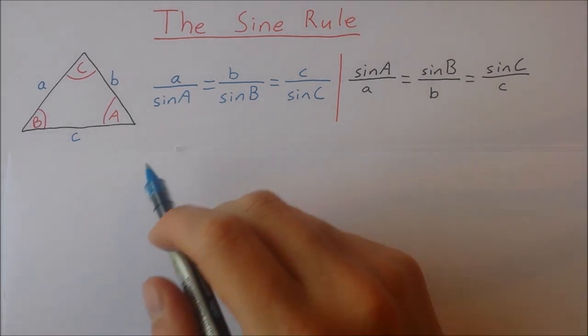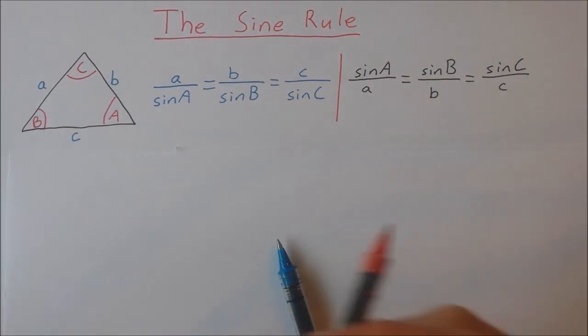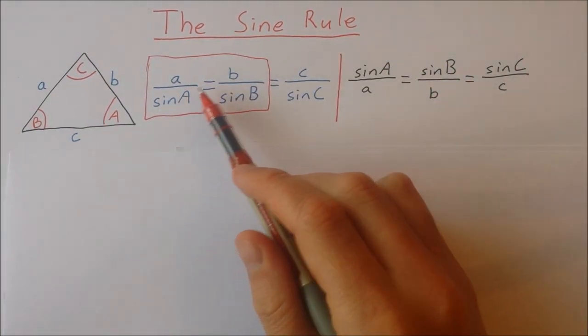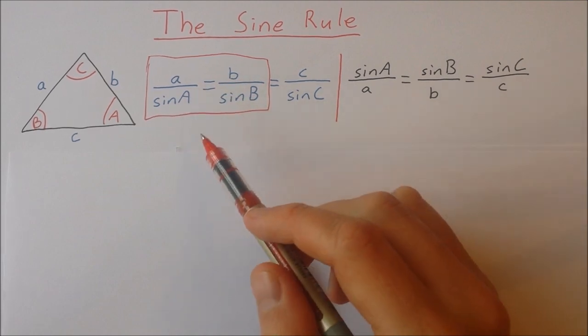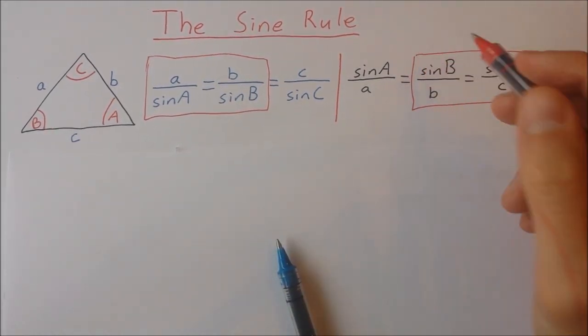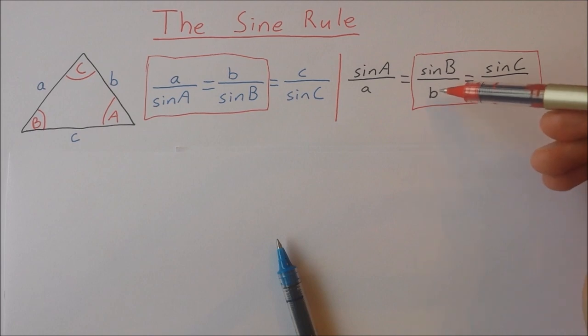So when we're using the sine rule we'll only ever use two of these. So for example we would use two sides and two angles, and if you know any three of these you can find the fourth one. You can do them in any order at all so long as you have an angle and a side opposite and then an angle and a side opposite. If you're missing one of them you can use the sine rule to find out what it is.